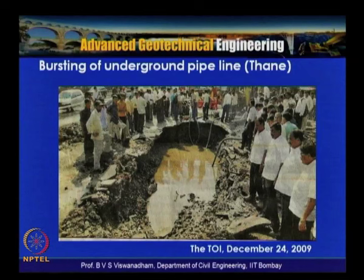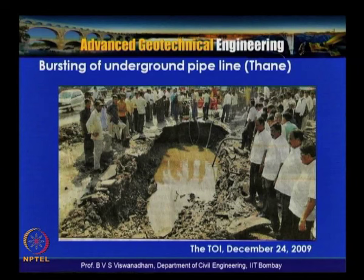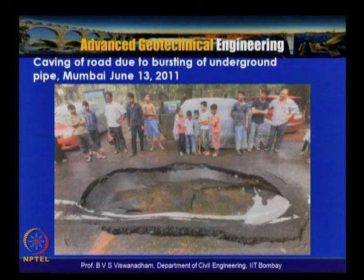Bursting of underground pipelines — a recurring problem in recent years — causes significant destruction. Pipes operated under pressure can burst when surge pressures exceed the capacity of a damaged section or weak joint, as shown by road caving caused by underground pipeline failure.